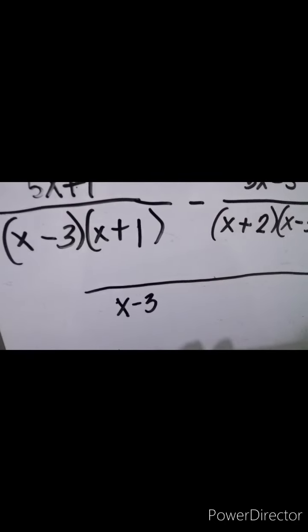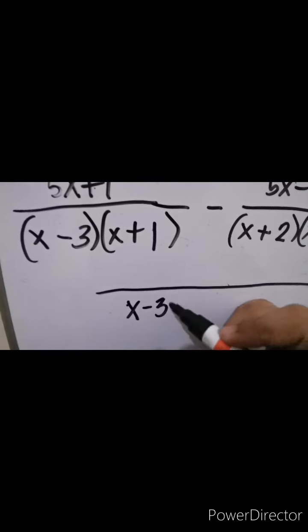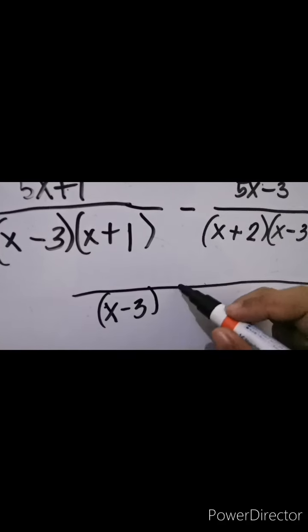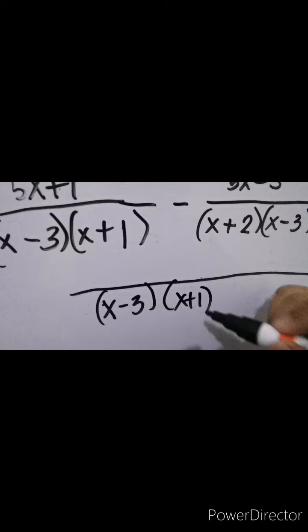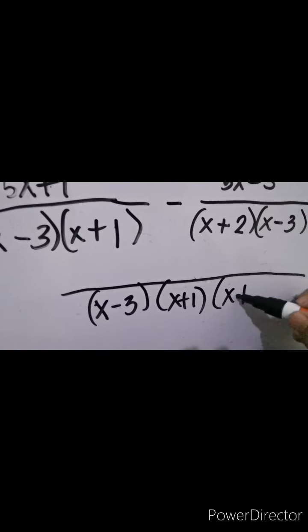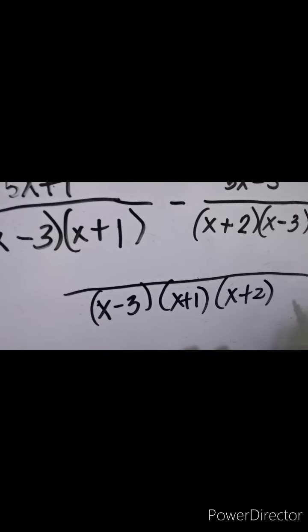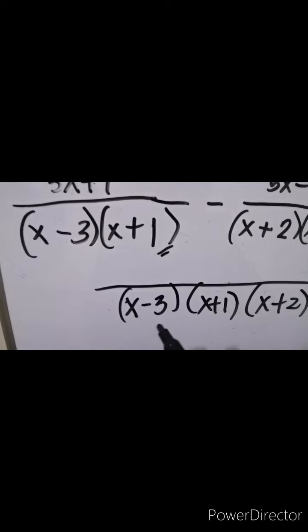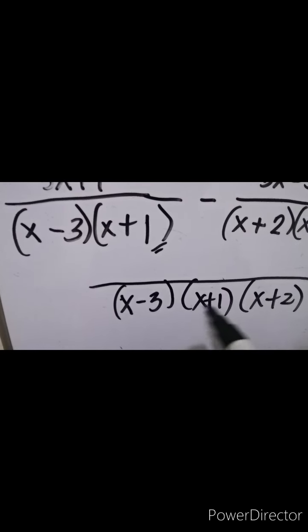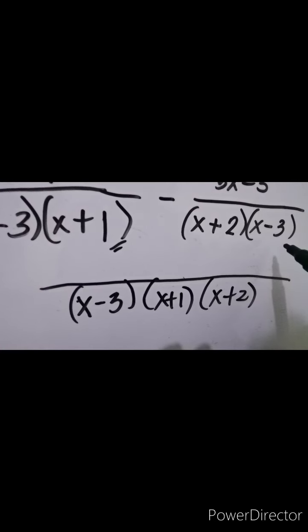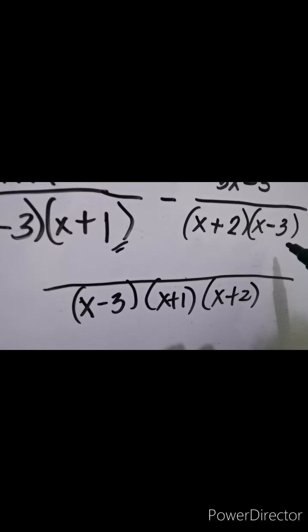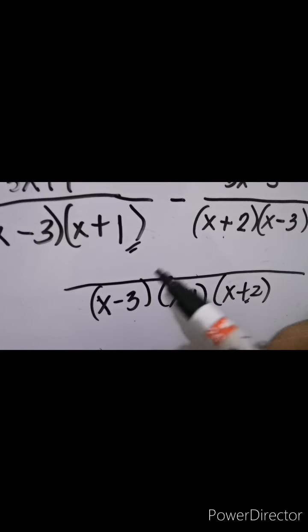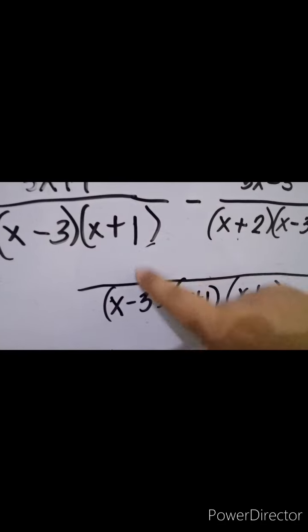Therefore we have x minus 3. Next, the other factors in the denominators are x plus 1 and x plus 2. So our LCD is (x minus 3)(x plus 1)(x plus 2). To verify: the first fraction needs x minus 3 and x plus 1 — we have those. The second fraction needs x plus 2 and x minus 3 — we have those too. So that is our LCD.